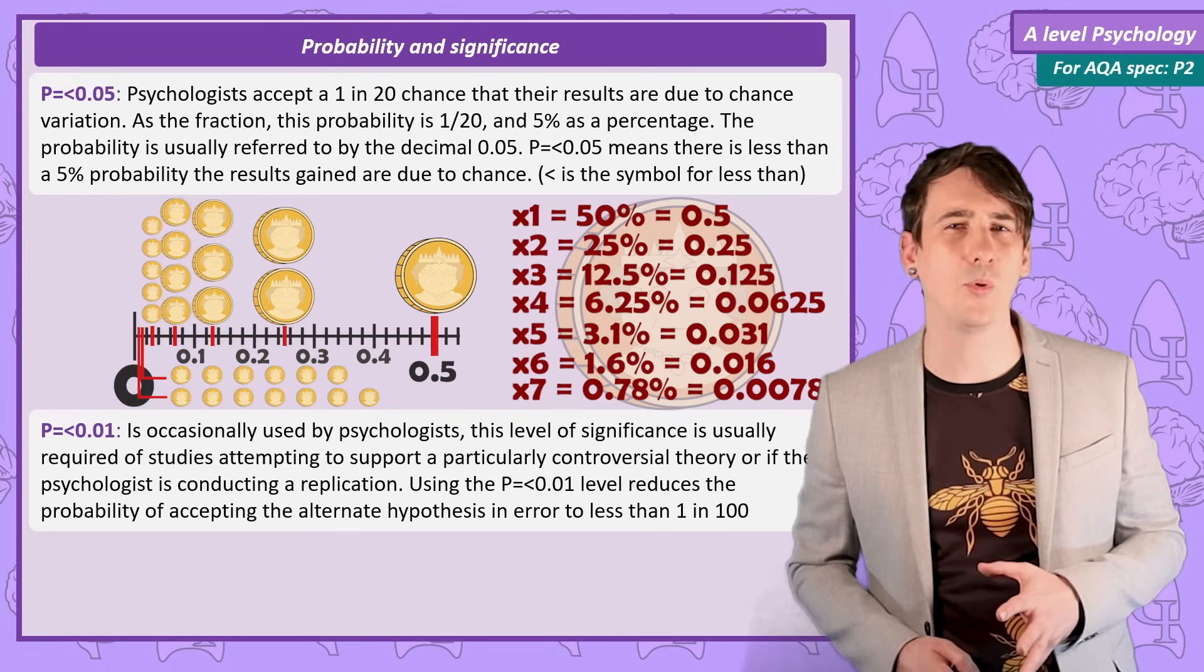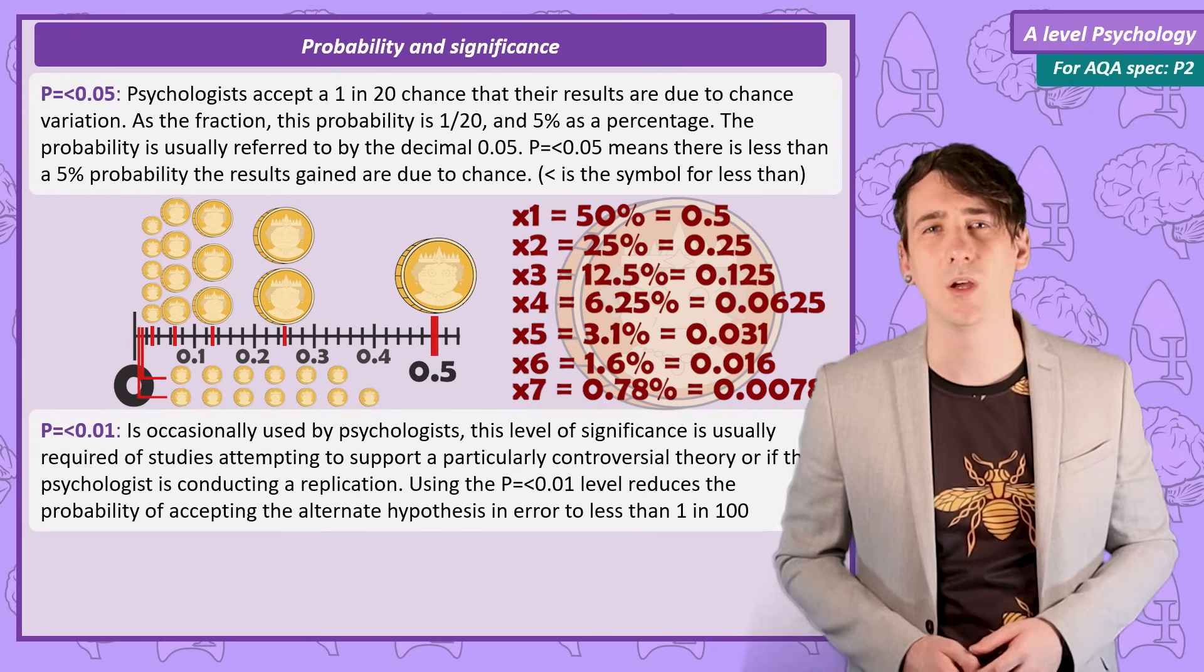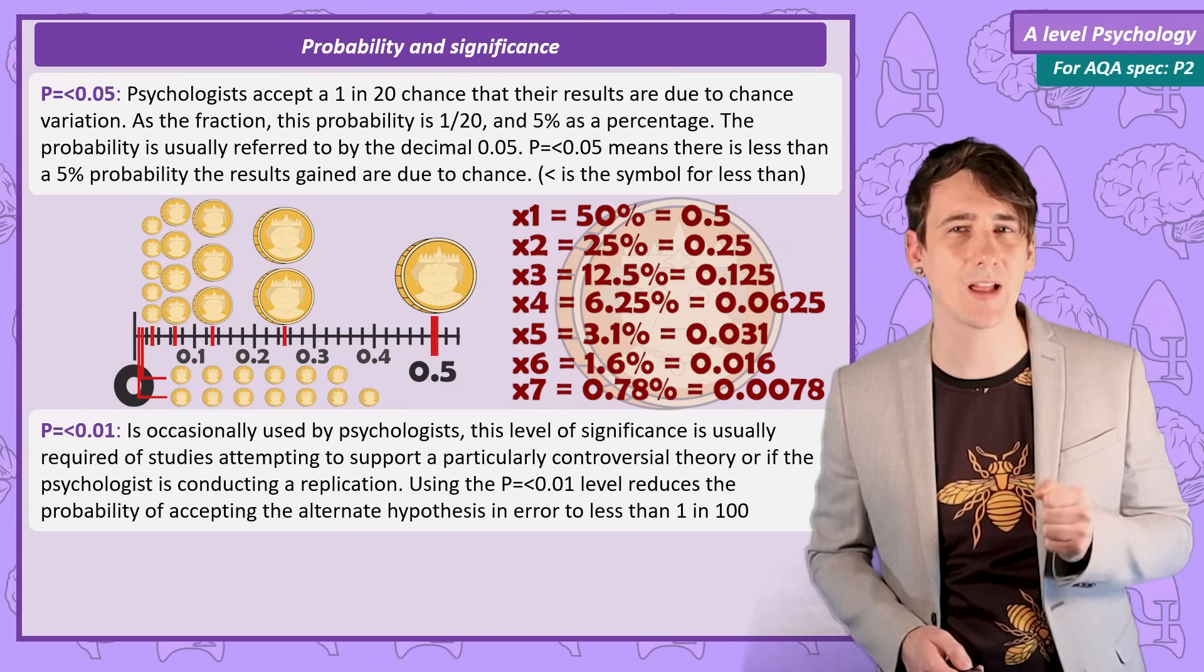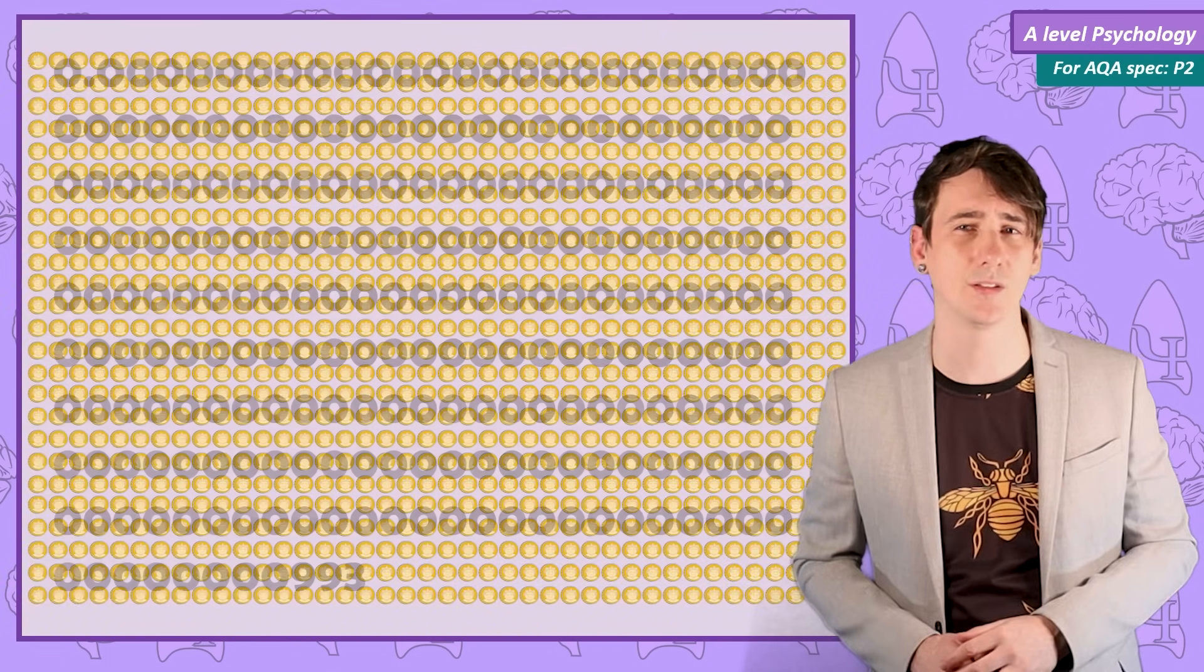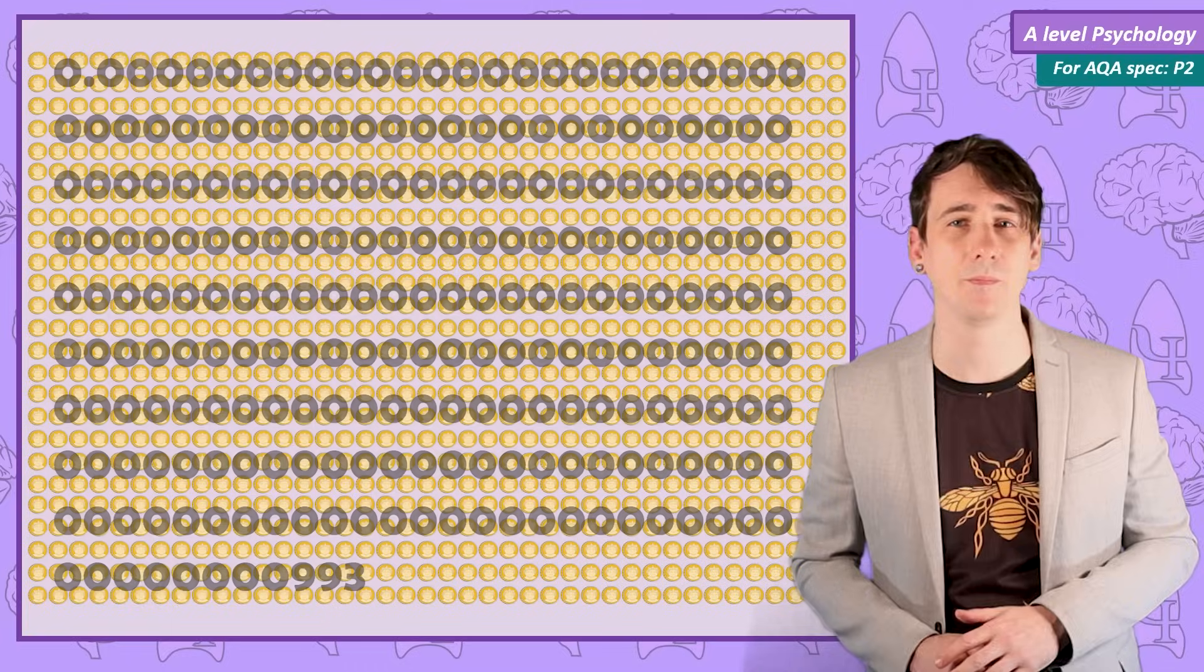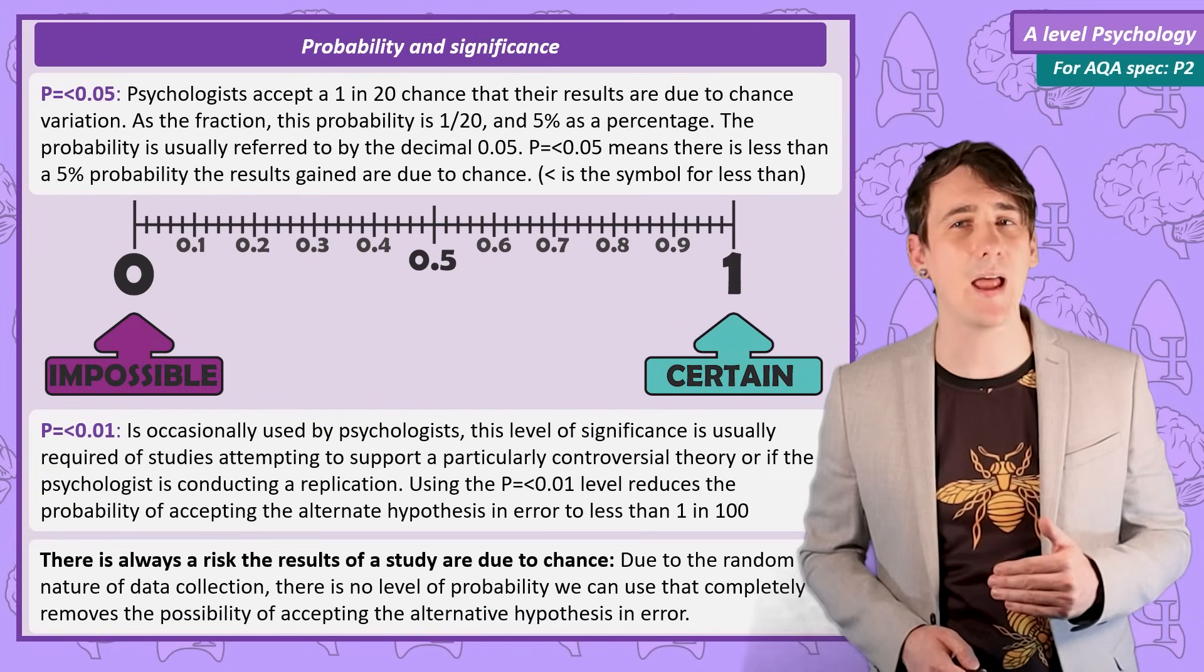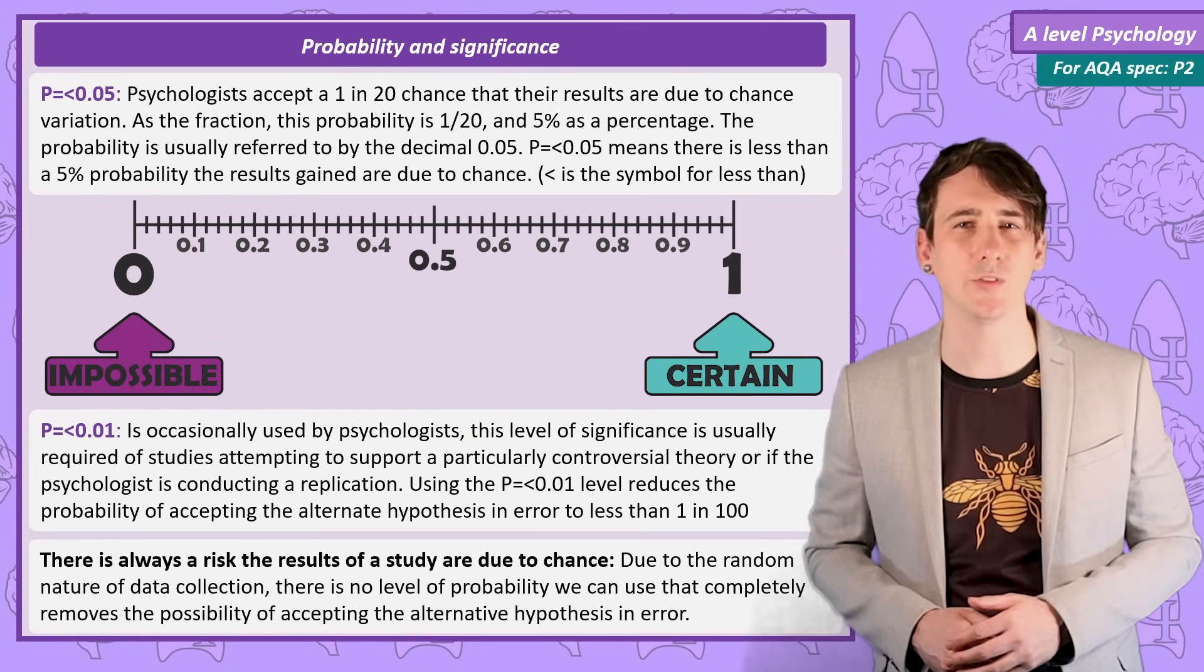Do you think I'll ever get to a point where I can reach 0%? Well, the answer is no. No matter how many times I flip the coin and get another head, there is a possibility it landed on heads by chance. To be fair, a very, very small chance. Here's the probability of getting 1,000 heads in a row. But the important point is there's always a chance, no matter how impressive the results, that I might be making an error when I accept my results, there's always some risk the results are due to chance.